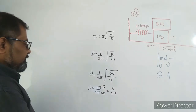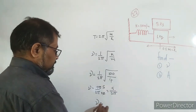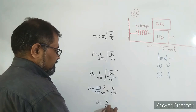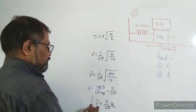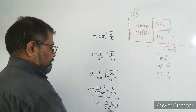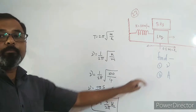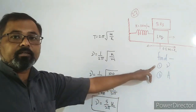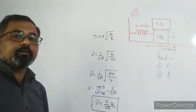So the frequency answer is 5/(2π) Hz. This is the frequency — that is the answer to the first part of the question. Now we also need to find the amplitude.